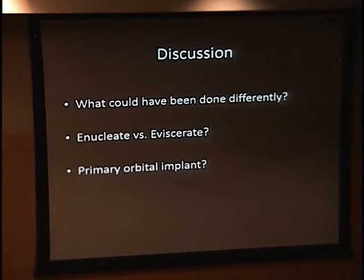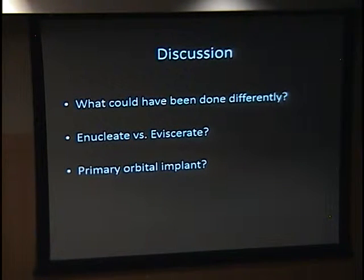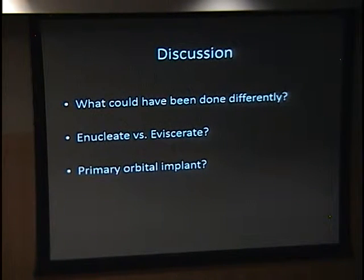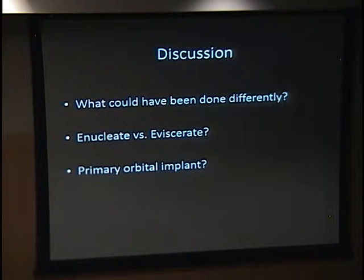So a few things: what could have been done differently in this case? Multiple surgeries, multiple complications, eventual loss of the eye, hospitalizations, and large cost — could this have been avoided? Should this patient have been eviscerated versus enucleated? Should he have had a primary orbital implant placed? As an aside, he's doing really well now. His conformer has been resized and fits well. He has no implant, so knowing what we know now, maybe no more surgery for this gentleman. Any thoughts from the audience?